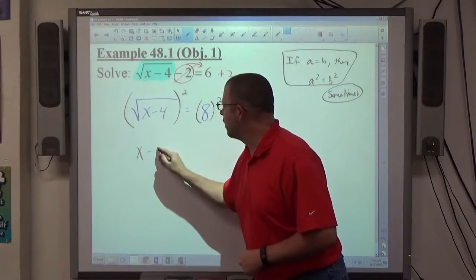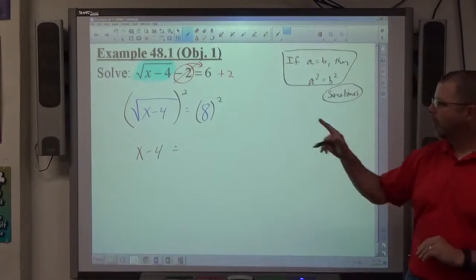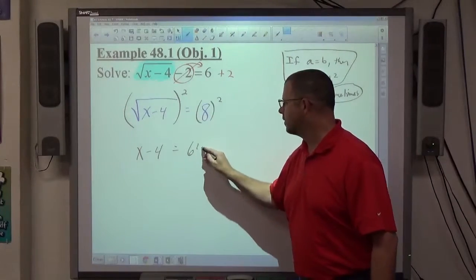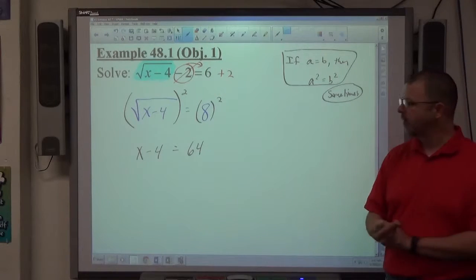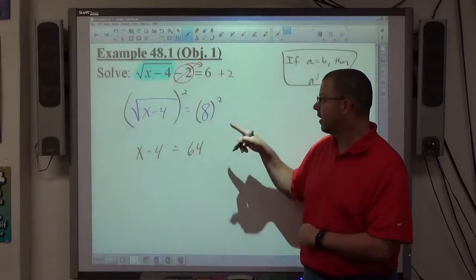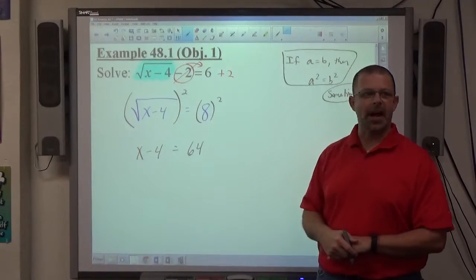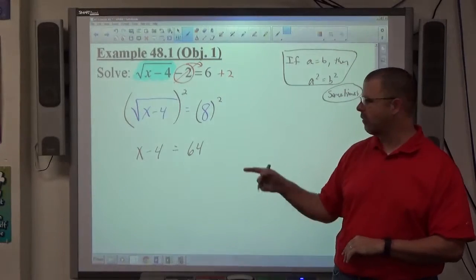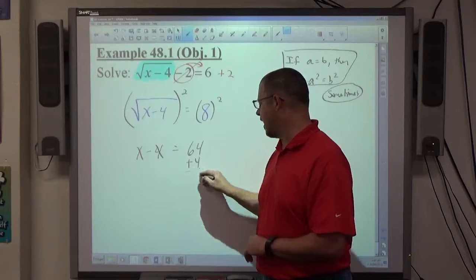I get x minus 4 on this side, because when you square a square root, you just get rid of the radical. When you square 8, you get 64. I'm just applying the same thing to both sides, and I'm just evaluating it, looking at 8 to the second power, 8 times 8 is 64. And then we're left with a real simple basic algebra 1 equation, right? How do I solve x minus 4 equals 64? I just add 4, so we're going to get x equals 68.